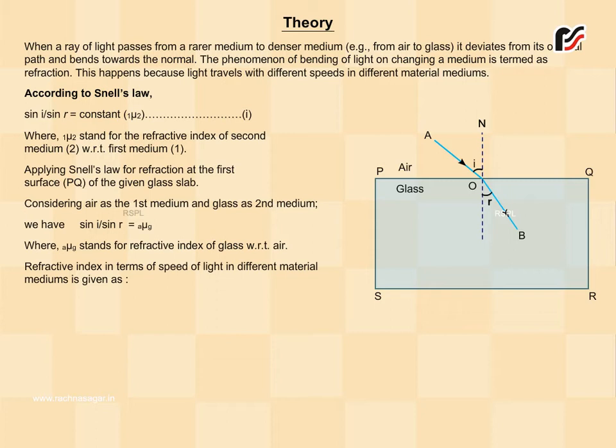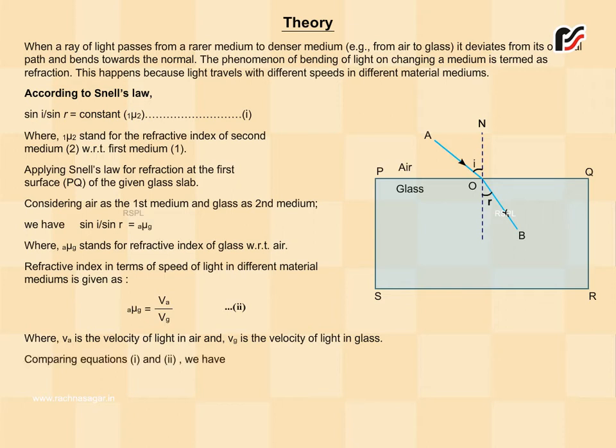Refractive index in terms of speed of light in different material mediums is given as ₐμ_g = v_a / v_g, where v_a is the velocity of light in air and v_g is the velocity of light in glass. Comparing equations, we have v_a / v_g = sin i / sin r, therefore v_g = v_a × sin r / sin i.